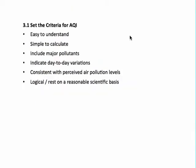The first stage is to set the criteria or requirements for the AQI. Based on the functions of AQI discussed previously, the following criteria can be established: it should be easy to understand, simple to calculate, include major air pollutants which have short-term exposure limits, be measurable quickly so that the index can indicate day-to-day variations, should be consistent with perceived air pollution levels, and should be logical — that is, it should rest on some scientific base.